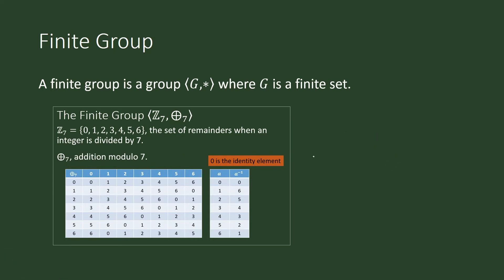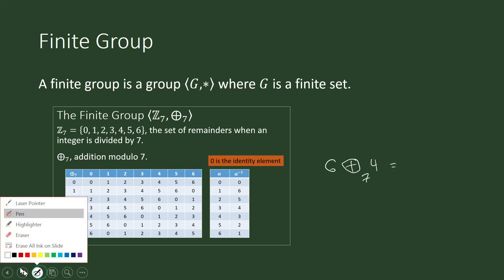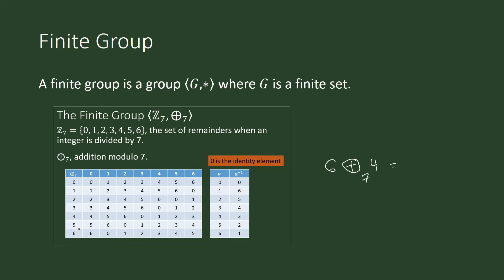What is 6 plus 4, addition modulo 7? We can look at the table for that. This is 6, this is 4, and this is the result — it's equal to 3.